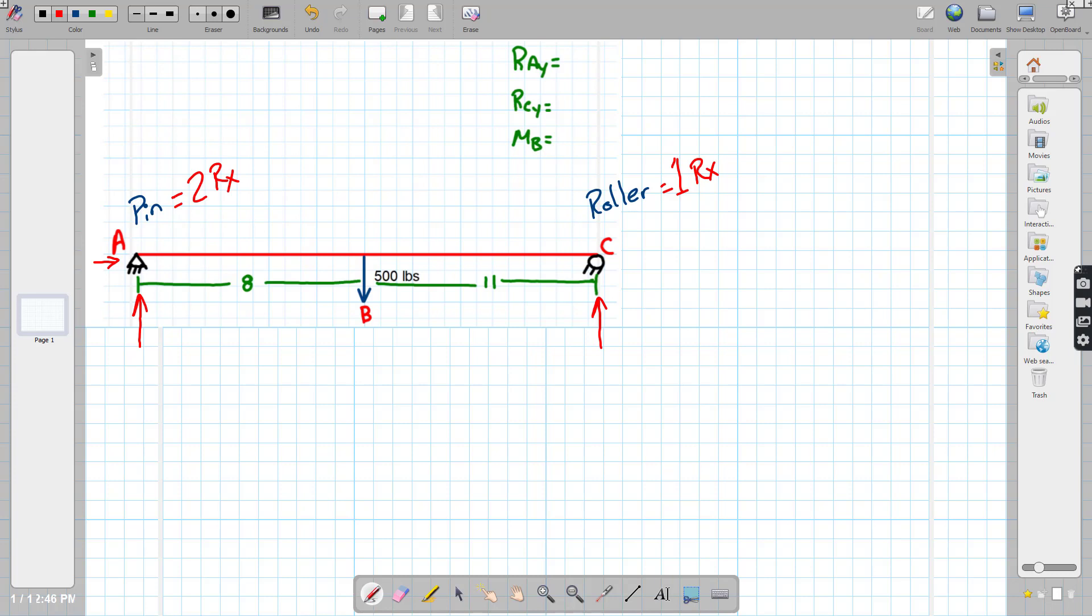So here's how we would label this. I would say this is going to be R-A-Y and this one over here would be R-A-X because it's going in that horizontal direction. Over here on the C, because it's a roller, we only have that one. So I would actually label this R-C-Y because it's going in the vertical direction.